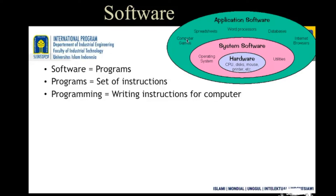Those softwares which users use to work on the computer are called application software. These are the two broad categories of software: system software and application software. Application software is you giving instruction to the computer to perform your task. Hardware needs to understand your instruction, and system software will help to do that. At the core you have hardware, then system software on top of the hardware, and on top of the system software you have application software.